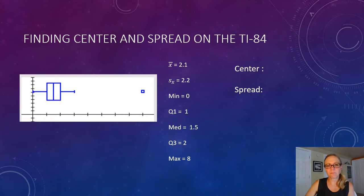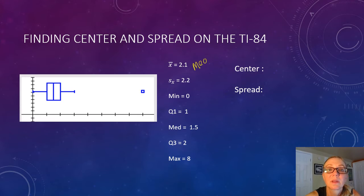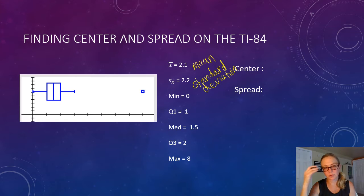Now this is the same data as the previous slide, but I've drawn a box plot on the calculator. Now the X-bar is the mean. S sub X is standard deviation. Minimum is self-explanatory. Q1 is quartile one we learned in an earlier video. Median is the middle of the data when it's put in order. Q3 is quartile three, and the maximum is the highest value in the dataset.